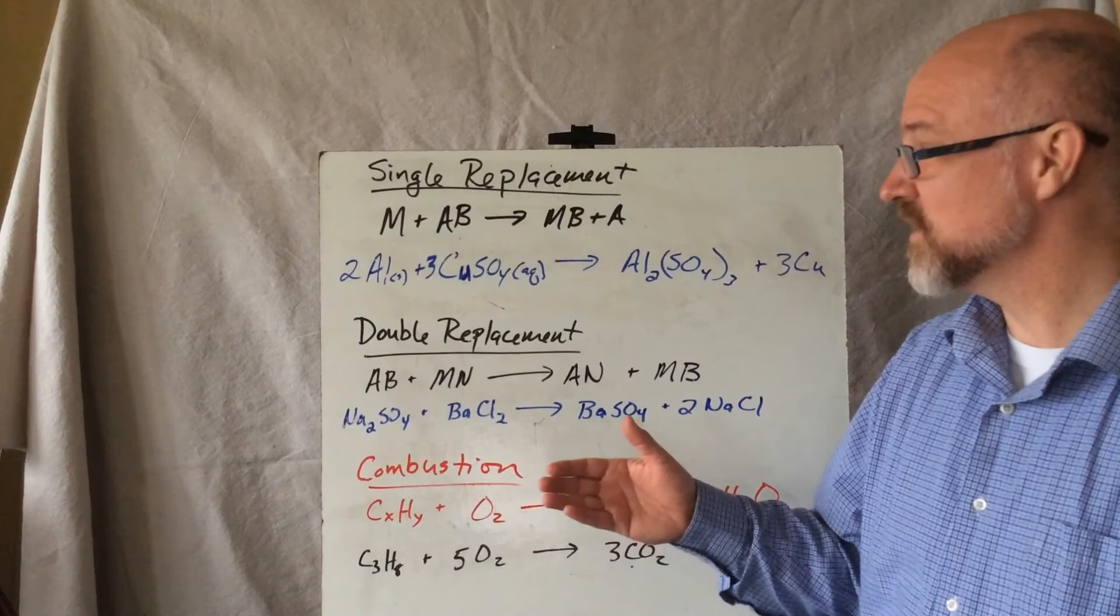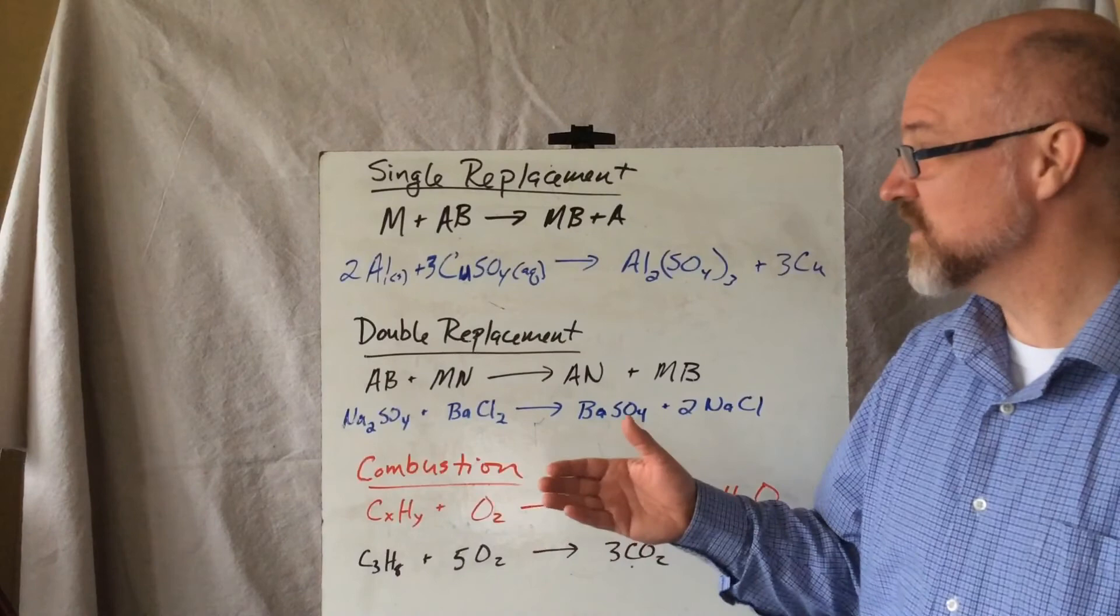And why is that useful information? Well, if we know the first half of a reaction, if we know which pattern it is, we can predict what should happen, what the product should be. And from there, we can have a story as to whether it's a reaction that will take place or not, and if so, what should we get out of it.